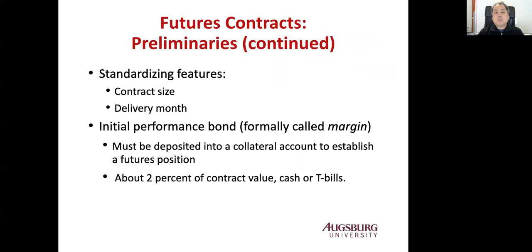You have to put a certain amount of money — formerly called margin, now called initial performance bonds — deposited into a collateral account to establish the futures position. If you want to set a futures position, you have to pay this, which is about 2% of contract value, payable in cash or T-bills.